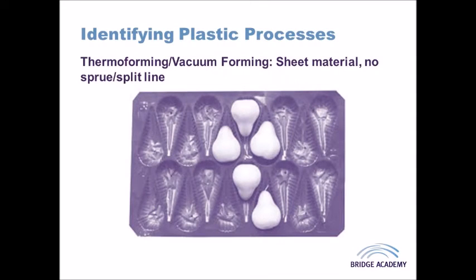Products that are thermoformed or vacuum formed start off as sheet materials — this is the first thing to look for. On closer inspection you may detect a degree of stretching, so you might find some areas that are thicker than others, as stretching occurs over deeper or larger molds. You will not see sprues, but you will see where excess plastic has been cut and removed from the sheet, typically using something like a nibbler or rotary cutting disc.